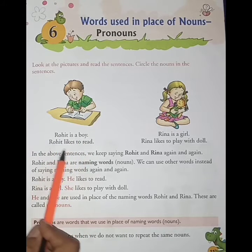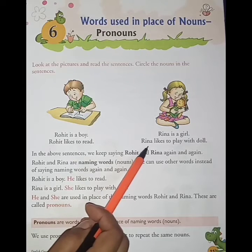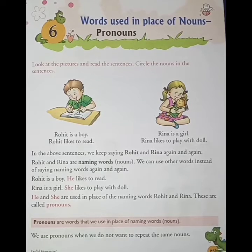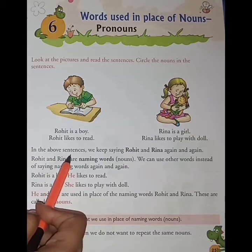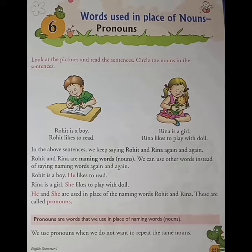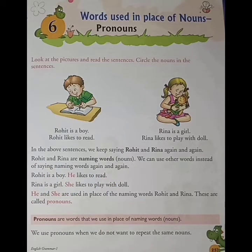In the above sentences, the noun Rohit is repeated two times. Similarly, Reena is also repeated two times. We keep saying Rohit and Reena again and again. Rohit and Reena are naming words — nouns. We can use other words instead of repeating these naming words again and again.